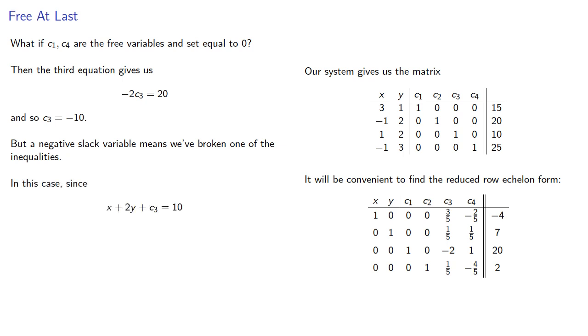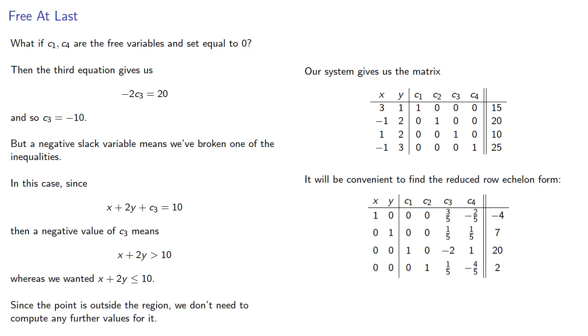In this case, since x plus 2y plus c3 equals 10, then a negative value of c3 means that x plus 2y is greater than 10, whereas we actually wanted it to be less than or equal to 10. Since the point is outside the region, we don't need to compute any further values for it.